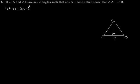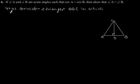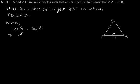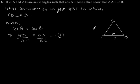In triangle ABC, CD is perpendicular to AB. Now it is given in the question that cos A is equal to cos B, which implies AD by AC is equal to BD by BC. Let us call this equation 1.